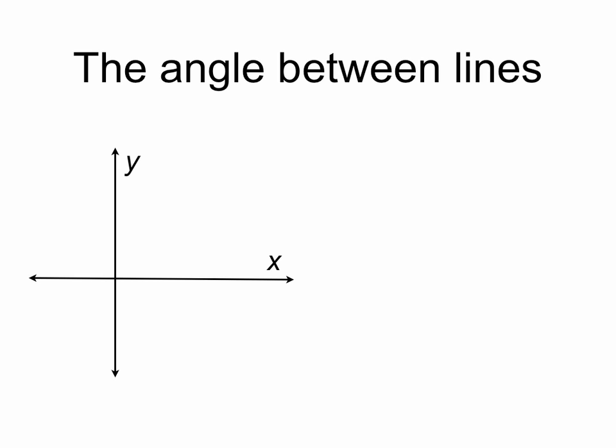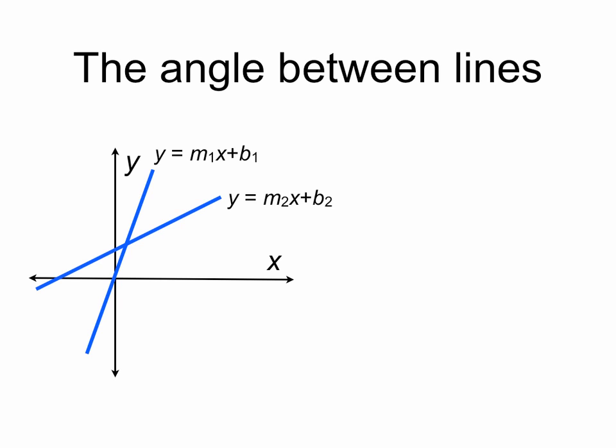First are our axes, and now we can draw our lines y equals m1x plus b1 and y equals m2x plus b2. Here's the angle theta — the angle between the lines that we're trying to find.